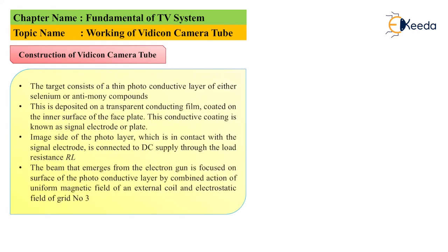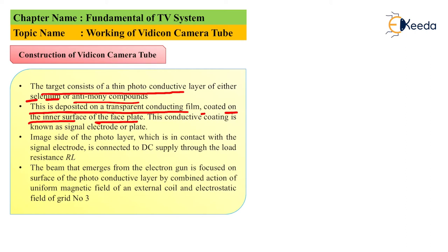In the case of Vidicon camera tube, the target consists of a thin photo conducting layer which is either made up of selenium or antimony compounds. This is deposited on a transparent conductive layer and coated onto the inner surface of the face plate. This conductive coating is known as the plate or single electrode. The image side of the photo layer, which is in contact with this single electrode, is connected to the DC supply through a load resistance RL.